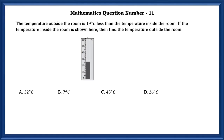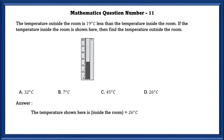Mathematics question number 11. The temperature outside the room is 19 degrees less than the temperature inside the room. If the temperature inside the room is shown on the thermometer, find the temperature outside the room. The temperature shown is 26 degrees Celsius. Therefore, the temperature outside the room is 26°C minus 19°C, which equals 7 degrees Celsius.